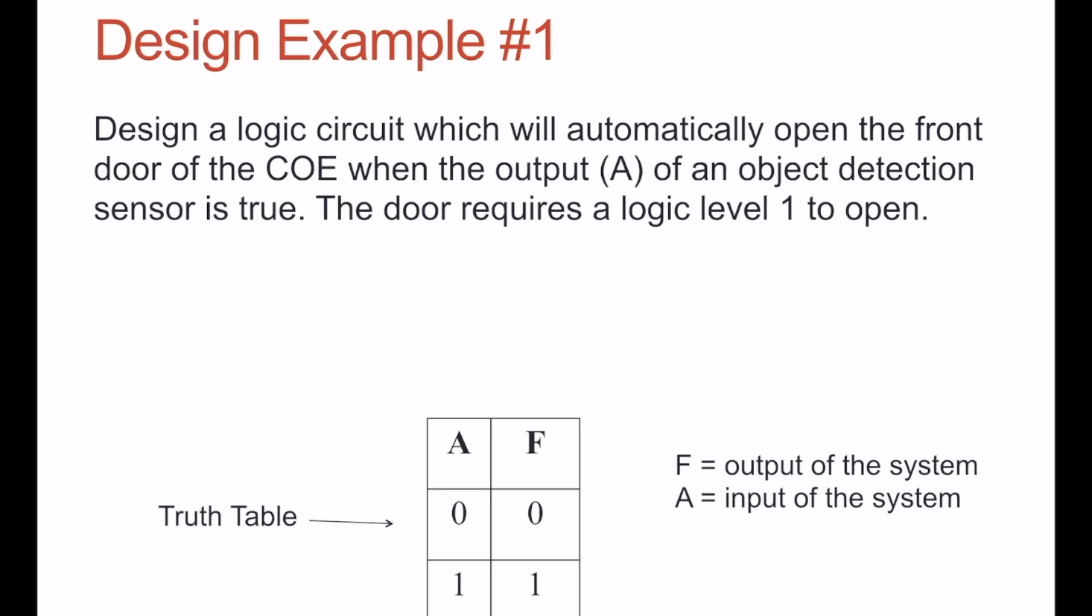Consider a problem where we have a sensor of some kind that detects a person. When the person is detected, we have an output of the sensor A, which will be a 1 when a person's there. Then we're going to have a controller that we're designing, or a control circuit.